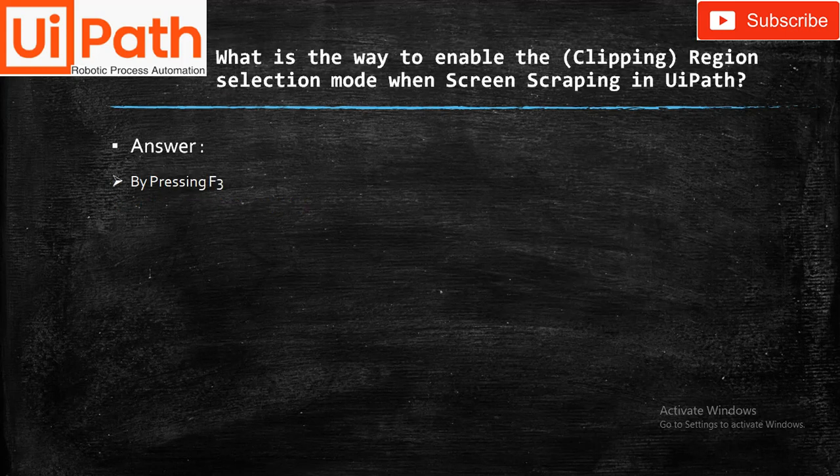What is the way to enable the clipping region selection mode when screen scraping in UiPath? Answer: By pressing F3.